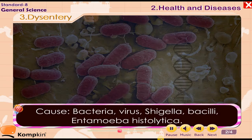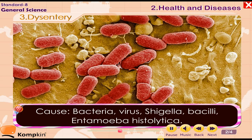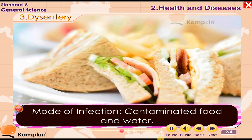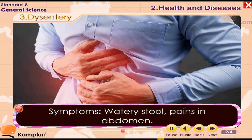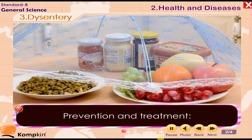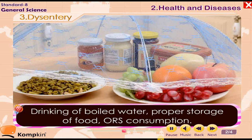3. Dysentery. Cause: Bacteria, virus — Shigella, Bacile, Entamoeba histolytica. Mode of infection: Contaminated food and water. Symptoms: Watery stool, pains in abdomen. Prevention and treatment: Drinking boiled water, proper storage of food, ORS consumption.